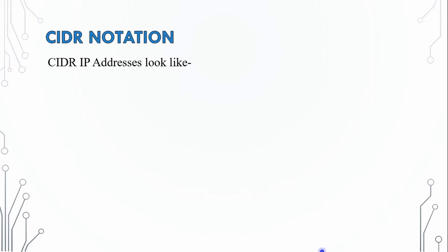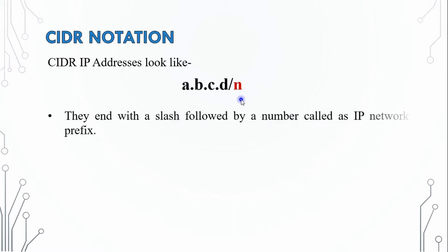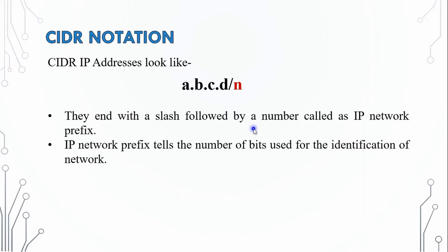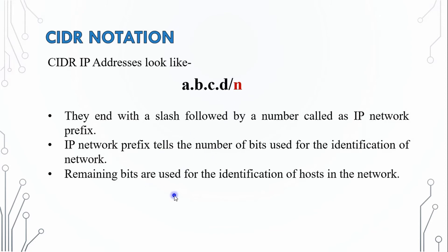CIDR Notation: a CIDR IP address looks like a.b.c.d/n, where n is used for the identification of networks. The network portion identifies the number of bits used. The remaining bits are then used for the identification of hosts in the network — these are called the host bits.